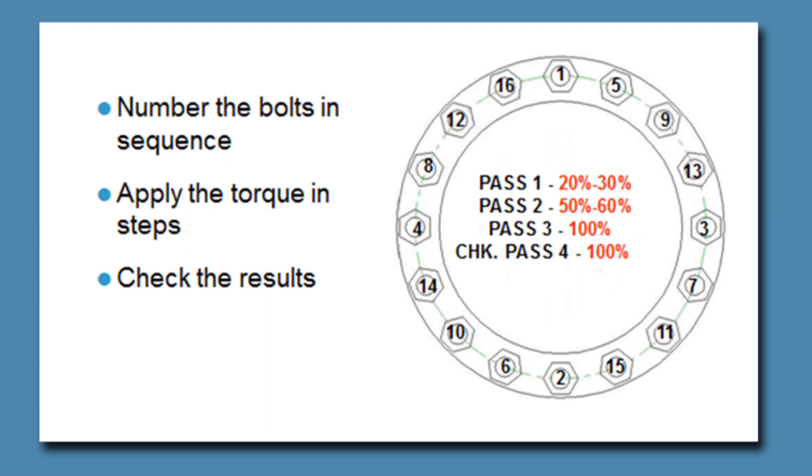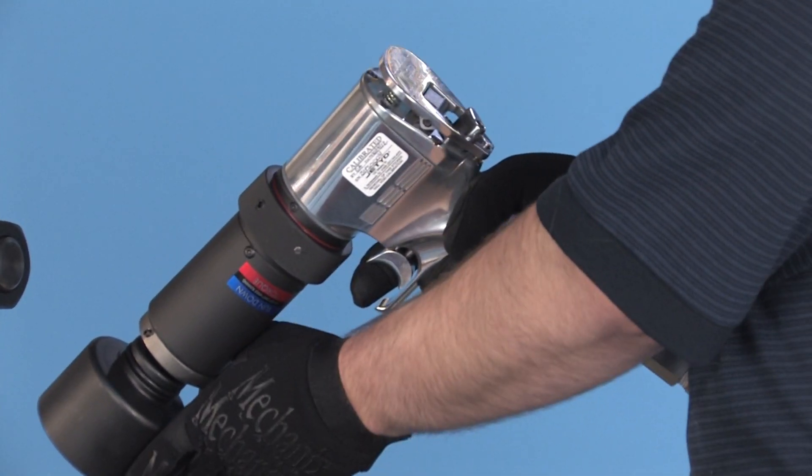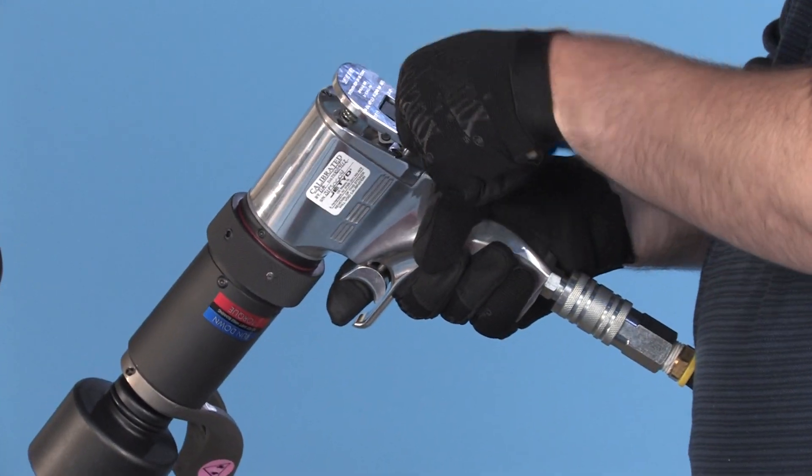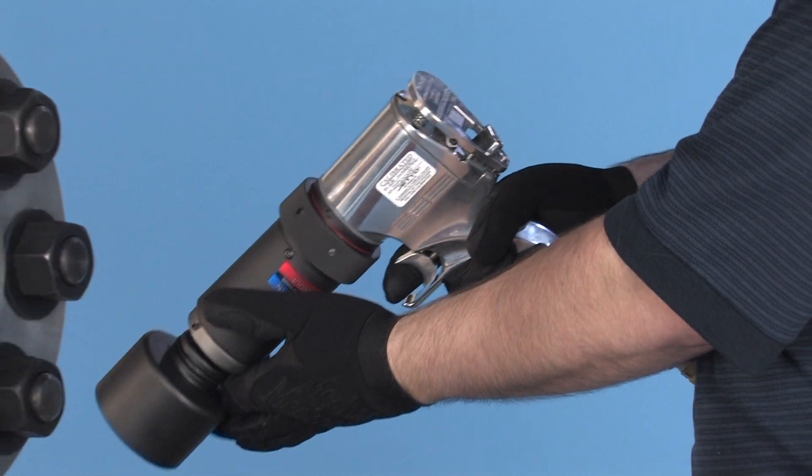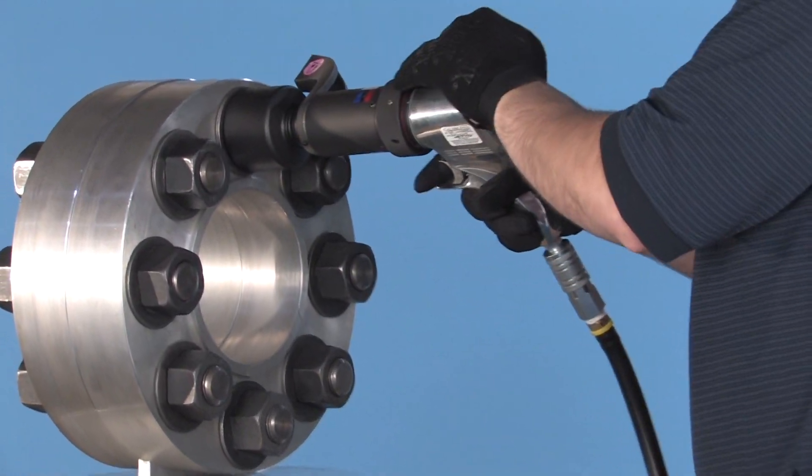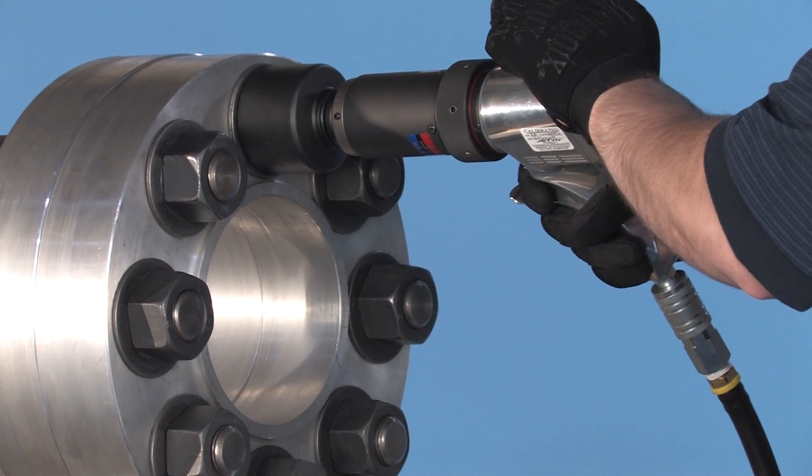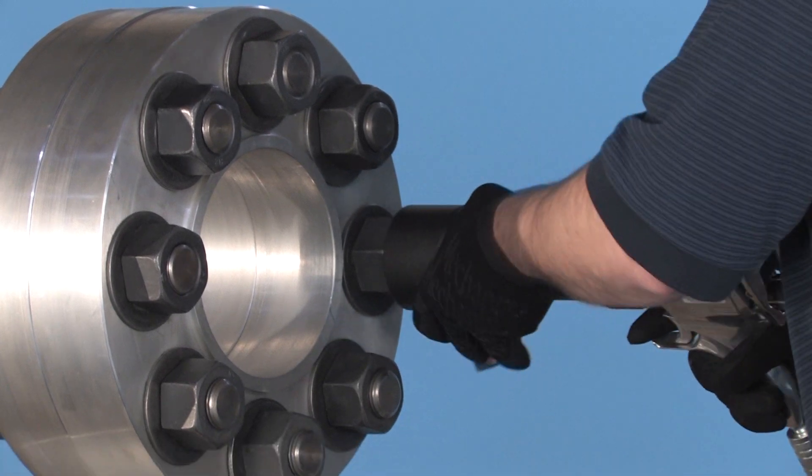To remove the nuts, we will reverse the process, this time beginning in low-speed power mode. Shift the directional control to the loosen side. Apply the wrench and position the reaction arm against the next nut, keeping in mind that the arm will now move clockwise opposite the direction of the socket.